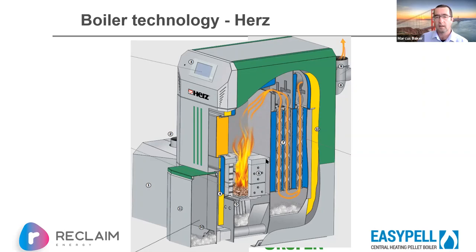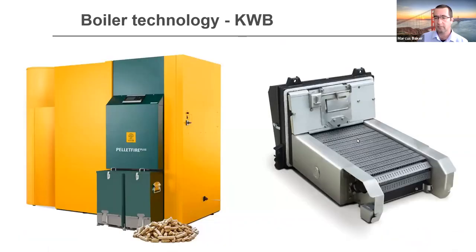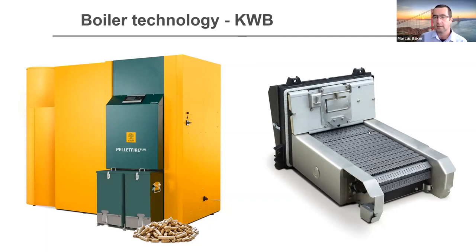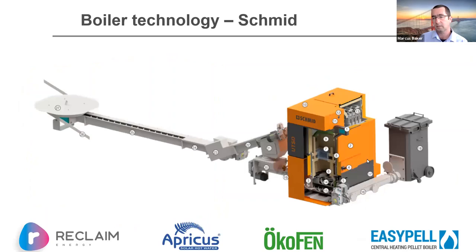KWB uses a rolling grate — essentially a conveyor belt that pellets drop onto, progressing through the combustion cycle and reducing to ash before falling off into an ash bin. Whether there are maintenance issues with a moving grate getting stuck or jammed is a question to ask. Schmid is the Swiss outlier in this list of Austrian boilers.